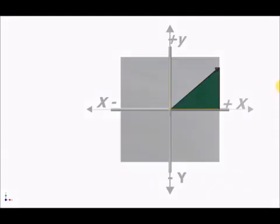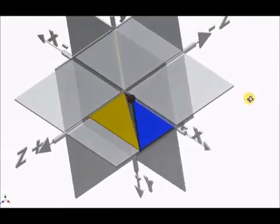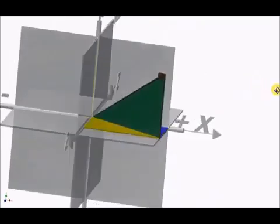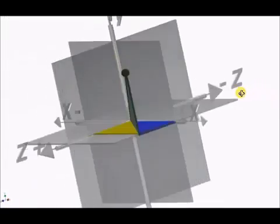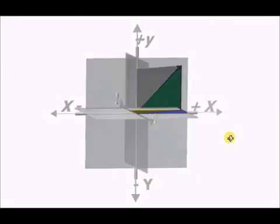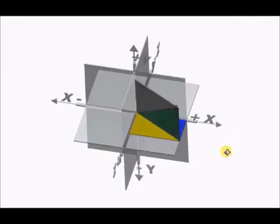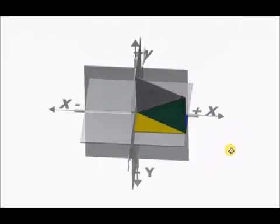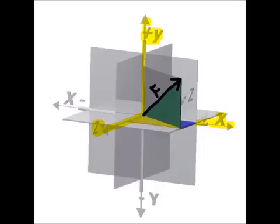To find the y component of our vector, we're going to create another triangle that's standing straight up. This is a right-hand triangle, and the side going straight up is our y component. You can see it as triangles or as rectangles — whichever way you walk around these sides, we just need to know the side in the x direction, in the z direction, and in the y direction. Let's walk around this one more time from the front.